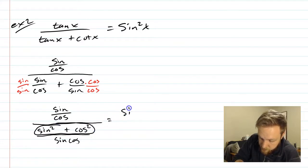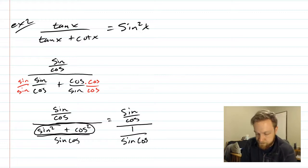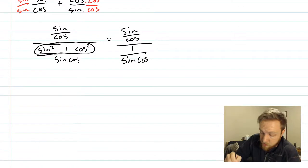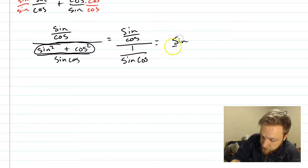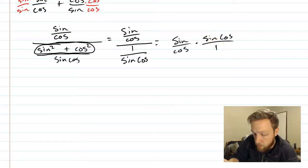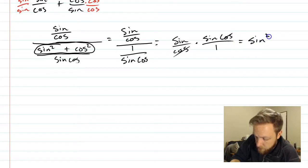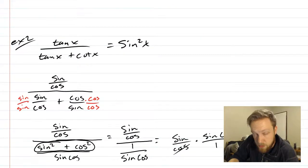You may notice this right here is one. So this really turns out to be sine over cosine all over one over sine cosine. And again, we're going to be doing the fraction trick where when you divide by a fraction, you flip and multiply. So we have sine over cosine, and then we're going to times by sine cosine over one. Now the cosines here will cancel. So I'm ending up with sine times sine, which is sine squared of x. This is exactly what we wanted.